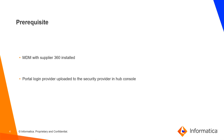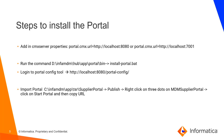What are the prerequisites? To install the Supplier Portal, we need to have MDM Supplier 360 installed. Also, we should configure a portal login provider uploaded as a security provider in Hub Console.